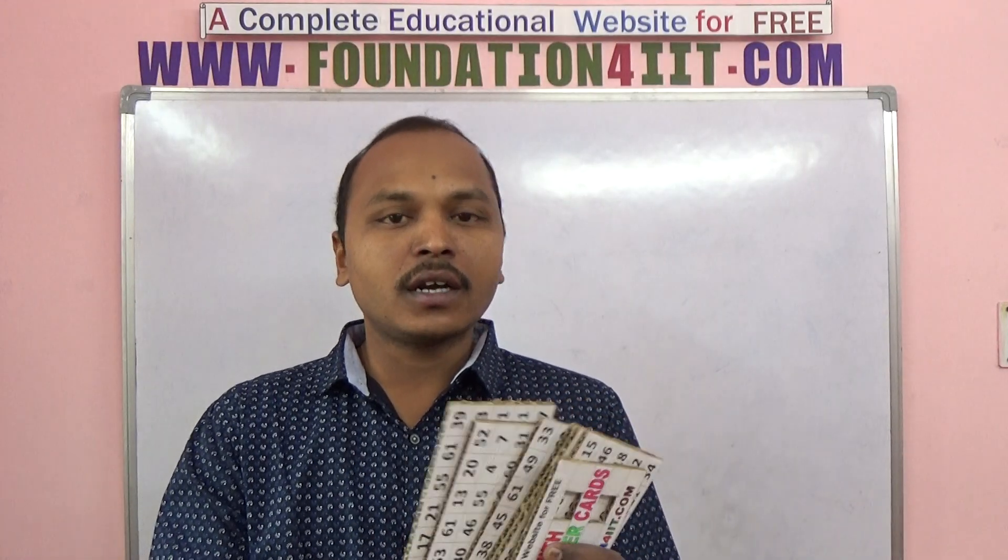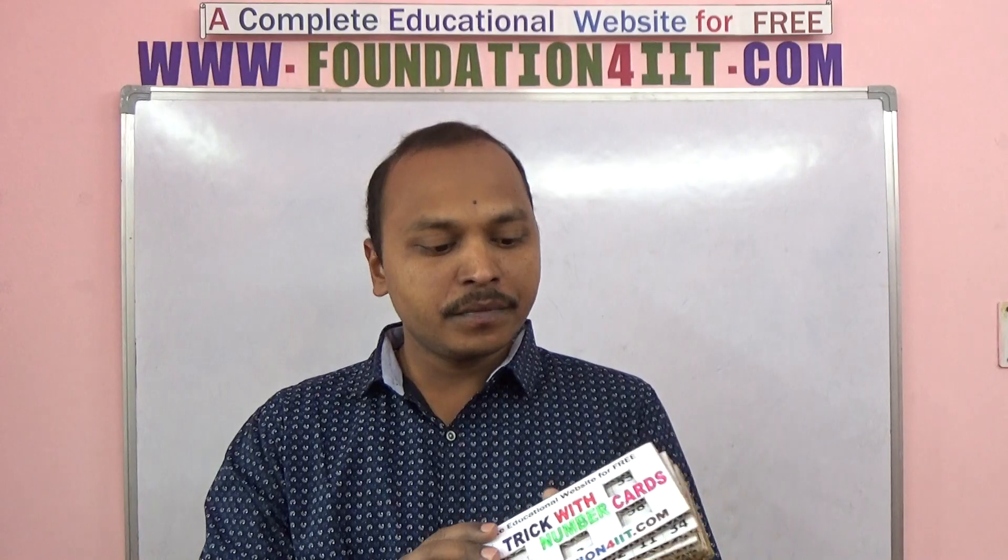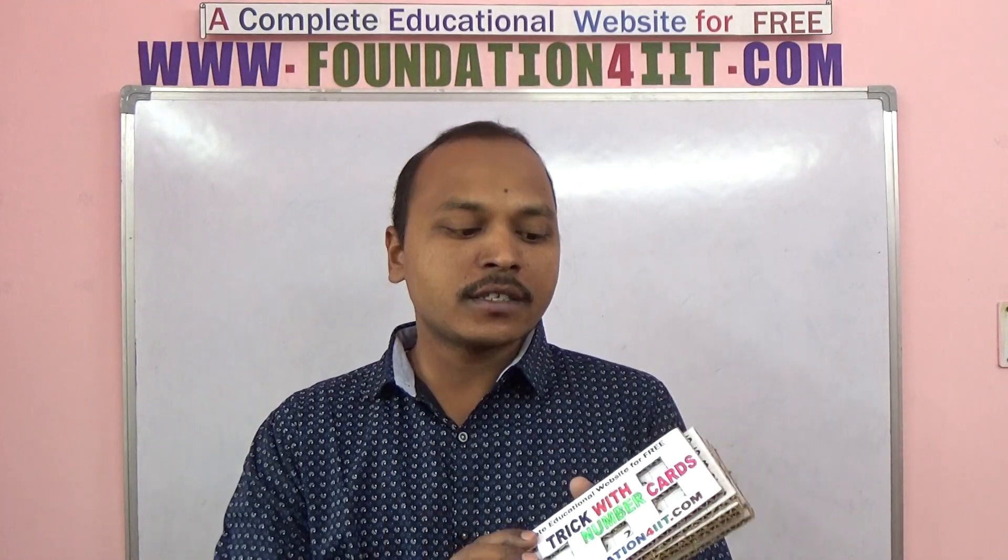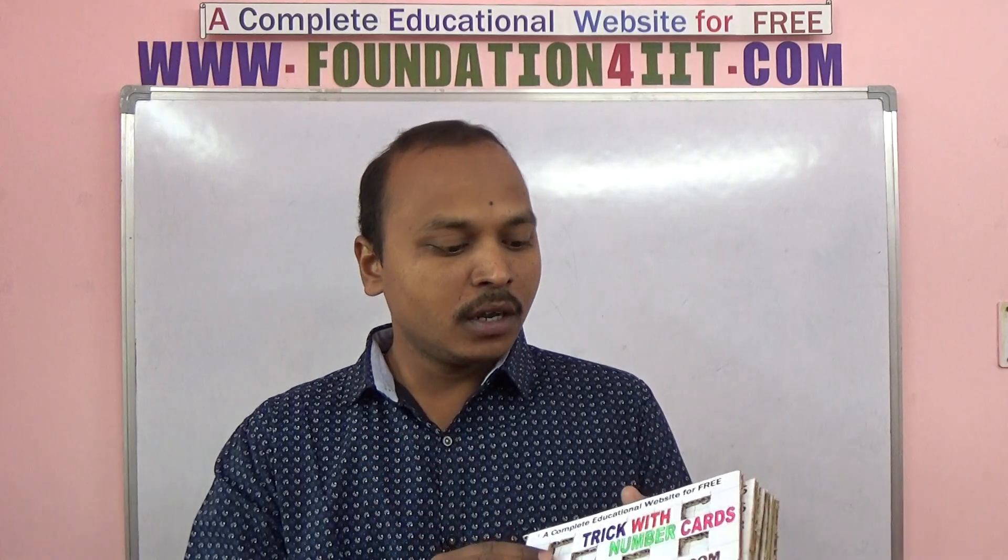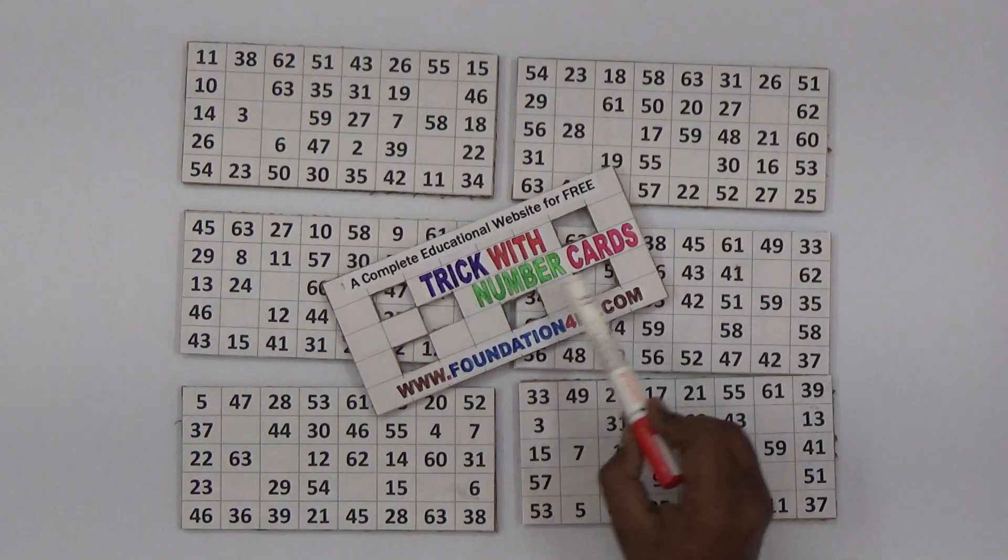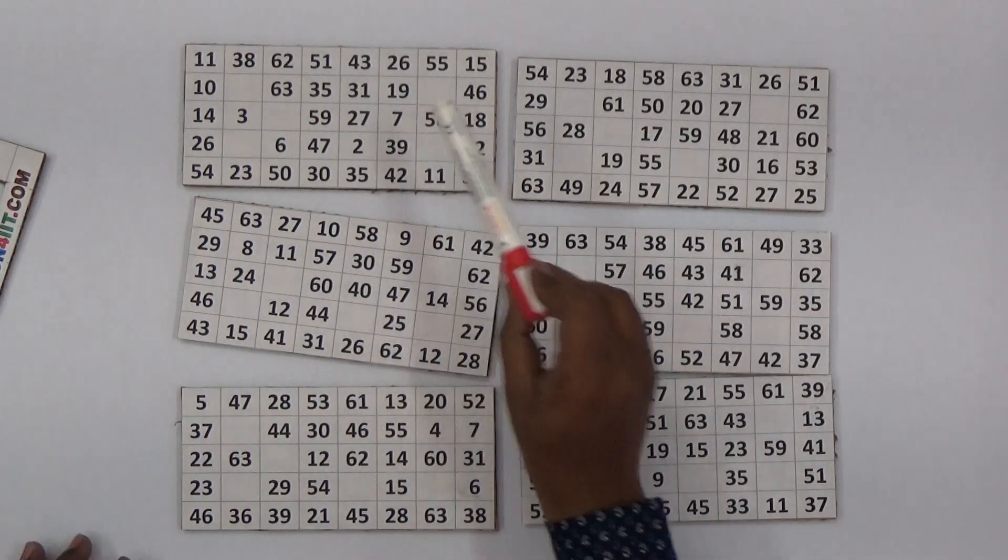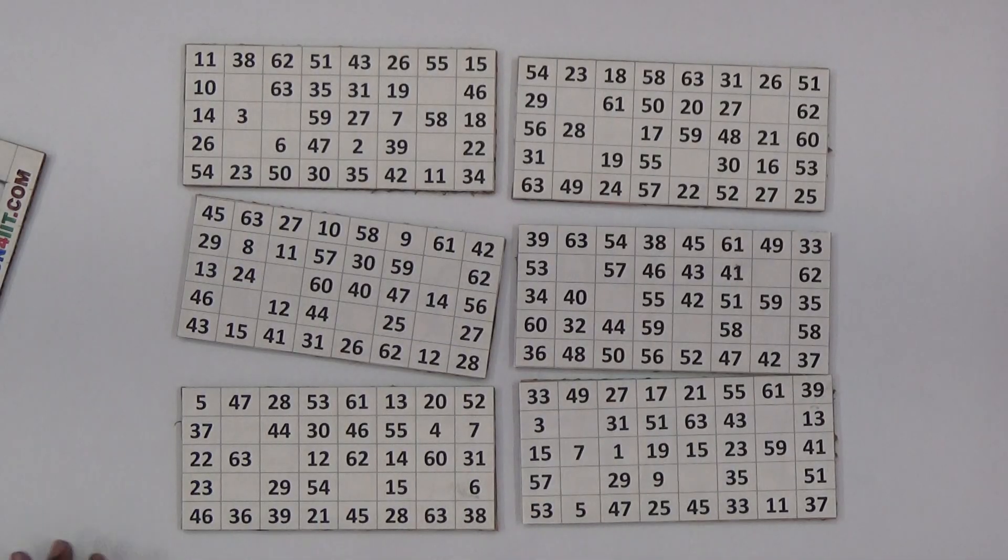I prepared some cards. Using these cards, from any number 1 to 60, we can say exactly what it is. Let's see how to prepare this model and how to use. I prepared six cards. What's the use of these cards?